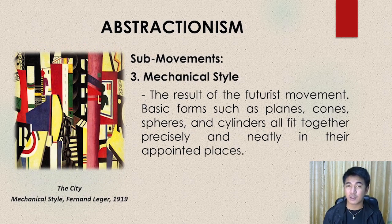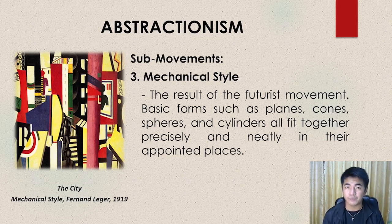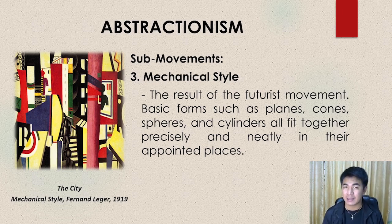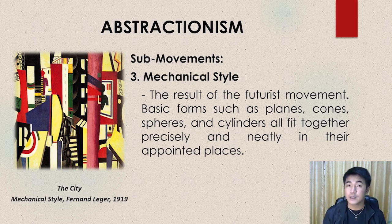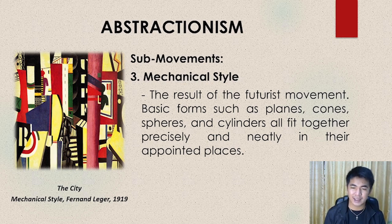Next we have Mechanical Style. Don't confuse Cubism and Mechanical Style. Mechanical Style uses planes, cones, spheres, and cylinders — which are considered as forms. So simply put, Cubism uses shapes while Mechanical Style uses forms. Two-dimensional for Cubism, three-dimensional for Mechanical Style. Looking at the example artwork here — The City, the Mechanical Style by Fernand Léger — you can notice it depicts buildings using forms: spheres, cylinders, and cones.